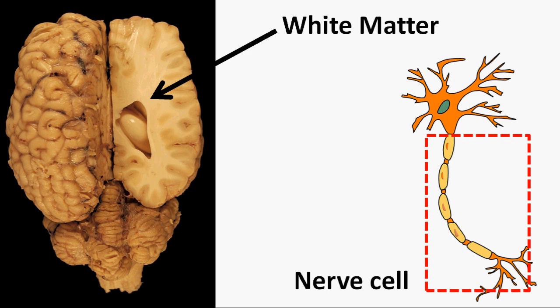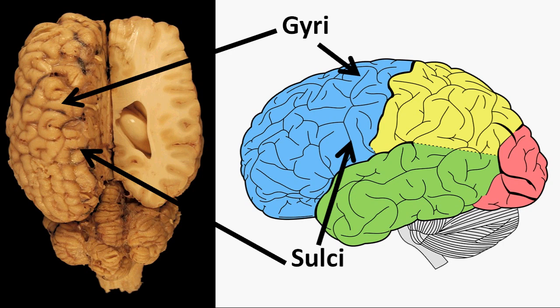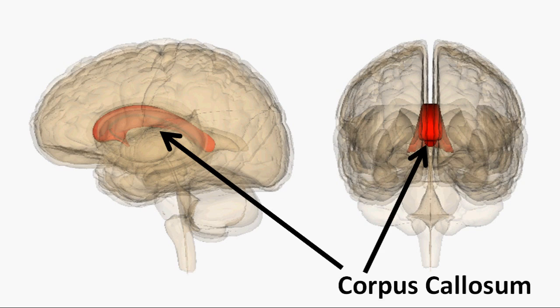The white matter beneath the gray matter is made of axons of nerve cells and makes connections between different brain parts. The cerebral cortex has a highly folded surface — the elevations are called gyri and the grooves are called sulci. The cerebrum is divided into two hemispheres, connected by a link made of white matter called the corpus callosum.